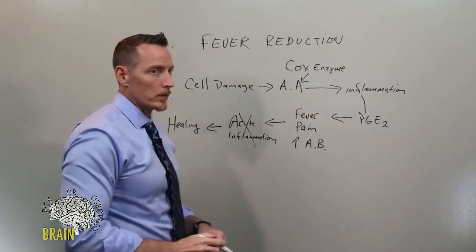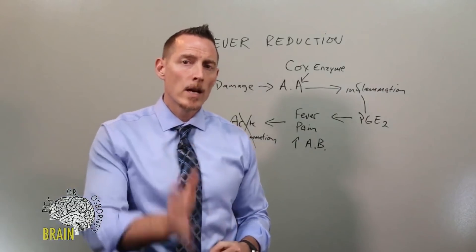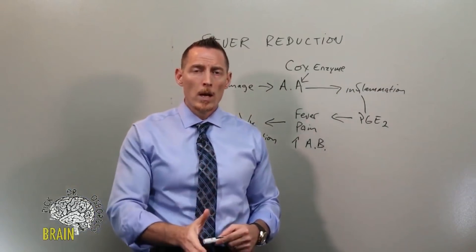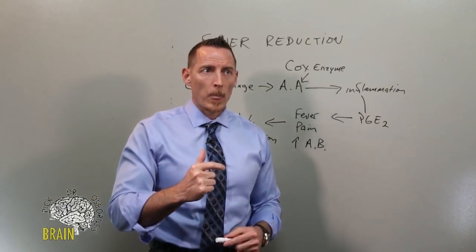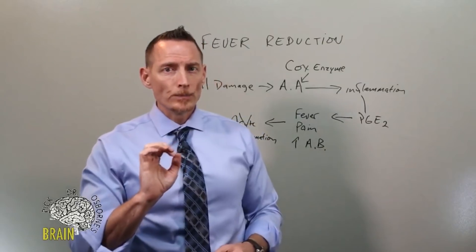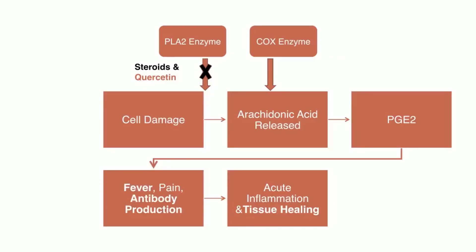If we block the acute aspect of inflammation altogether, it can potentially slow down the healing process. If you're in the hospital and need to block acute inflammation to save your life, that's one thing. Looking at the next slide, you can see the PLA2 enzyme with a big black X on it — steroids and quercetin are shown there. This is one mechanism by which steroids block inflammation: when there's damage, the PLA2 enzyme is blocked by steroids, stopping the inflammatory damage from persisting.